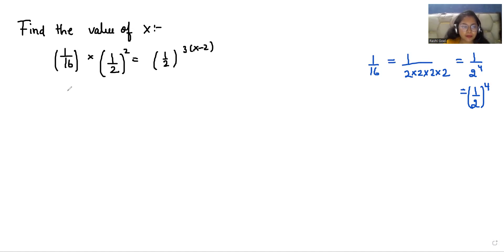So I'm going to replace this: (1/2)⁴ × (1/2)² = (1/2)^(3(x-2)).